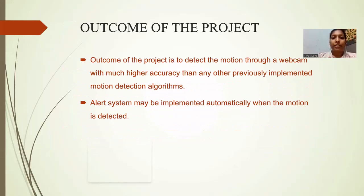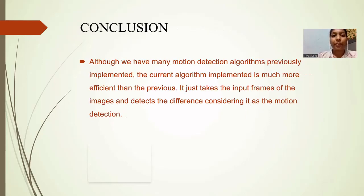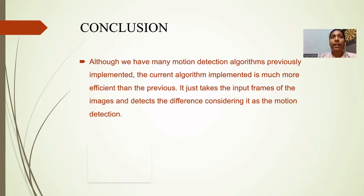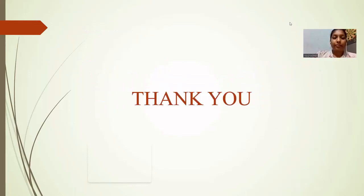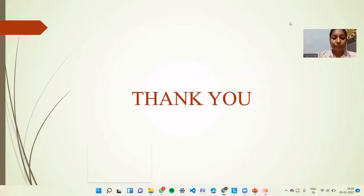The outcome of our project is to detect motion through a webcam with higher accuracy than previously implemented motion detection algorithms. An alert system may also be implemented automatically when motion is detected. In conclusion, although many motion detection algorithms were previously implemented, the current implementation is more efficient — it takes the key information from images and detects differences, treating them as motion. Thank you.